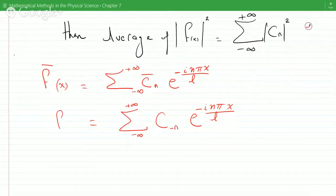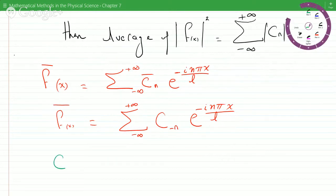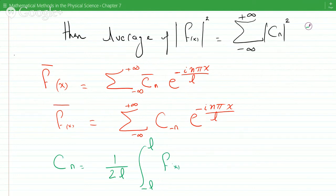OK, so that's the complex conjugate of F. But we also know that the coefficients, C_n, equals 1 over 2L, those are the coefficients of the Fourier transform, minus L to L of F of x, in the complex exponential, F of x e to the minus i n pi x over L, right? dx.